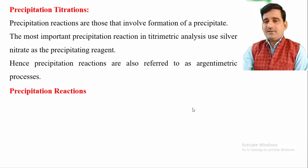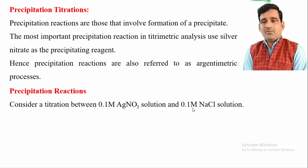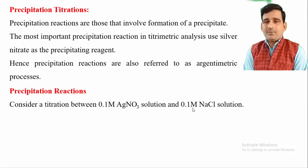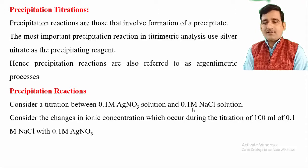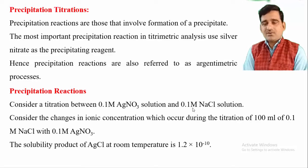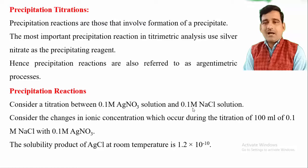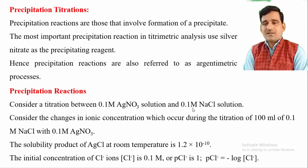Consider the precipitation reaction: the titration between 0.1 molar silver nitrate solution and 0.1 molar sodium chloride solution. When silver nitrate reacts with sodium chloride, it gives a white precipitate of silver chloride. Consider the change in ionic concentration during the titration. We take 100 mL of 0.1 molar NaCl solution with 0.1 molar silver nitrate. The solubility product of AgCl at room temperature is 1.2 × 10⁻¹⁰.